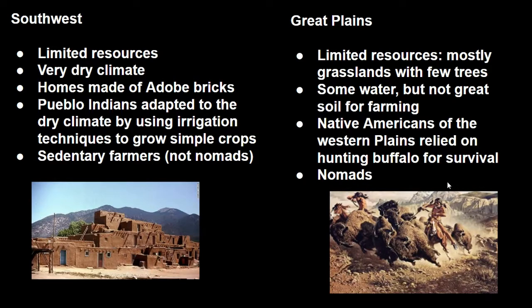Comparing the Southwest and Plains Indians: both groups had limited resources. The Plains Indians lived in mostly treeless grasslands with some water but poor soil for farming, so they relied on hunting the buffalo for survival, using that one plentiful resource to meet most basic needs. Because they were hunters, they were nomads, always on the move. The Pueblo Indians of the Southwest had very limited resources but became farmers despite the dry climate, made homes from adobe bricks of sun-dried clay, used irrigation to grow crops — most importantly corn — and were sedentary, staying in one place to tend their crops.